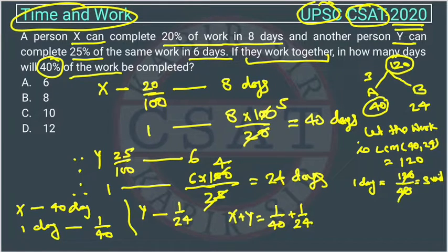Similarly for Y, so in one day how many units Y is able to complete? 120 upon 24. So it will be 5 units. So Y is completing 5 units per day.